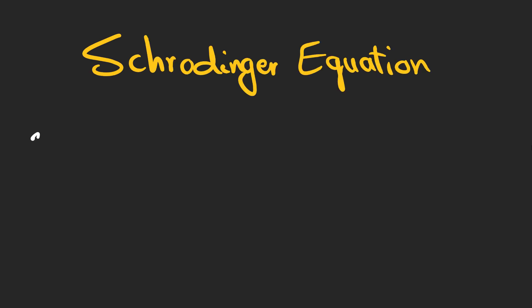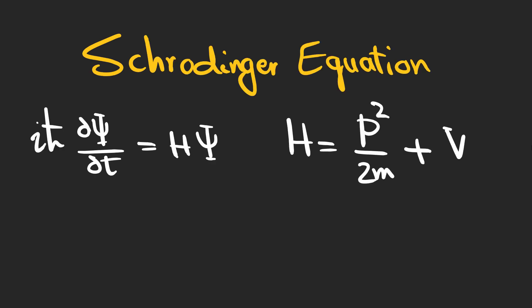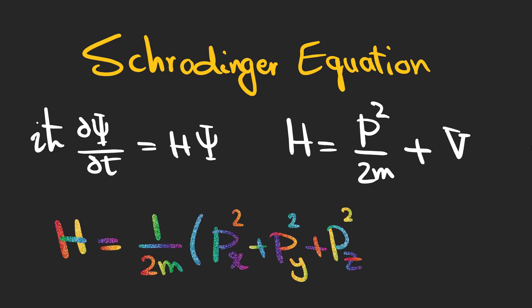We have already talked about the Schrödinger equation in one dimension in which H consists of the kinetic energy and the potential energy of the particle. We can easily generalize this concept in three dimensions using three momentums along the three axes X, Y, and Z.